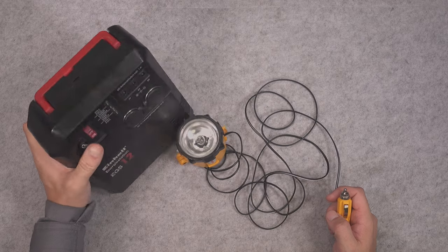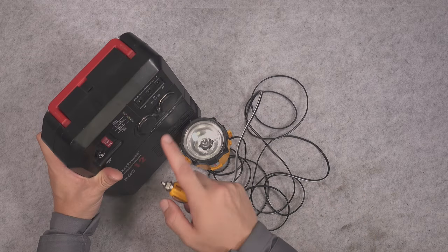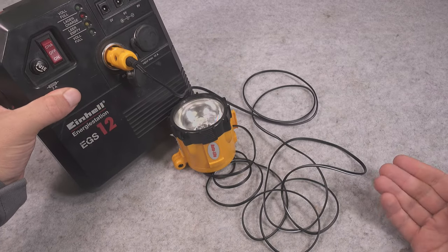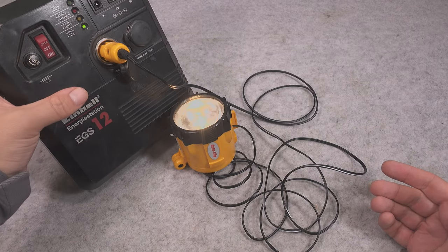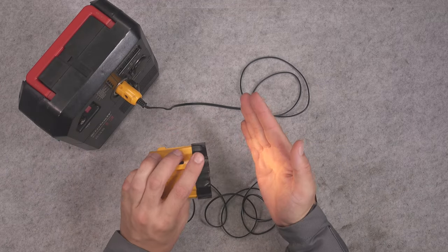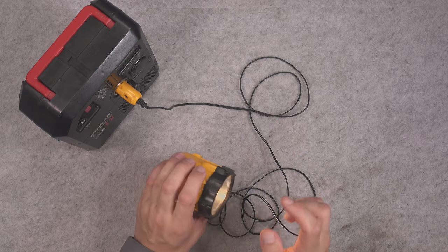Here I've got my portable power station, and we've got two cigarette lighter sockets. So we're just going to attach it, and I'm going to turn it on. As you can see, we've got an absolutely beautiful light.